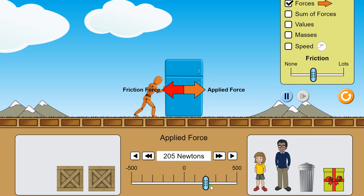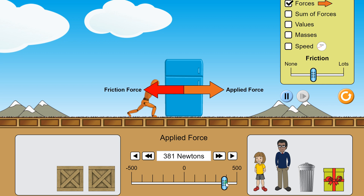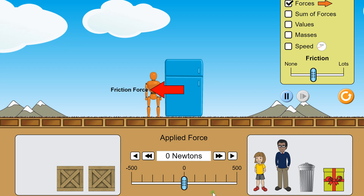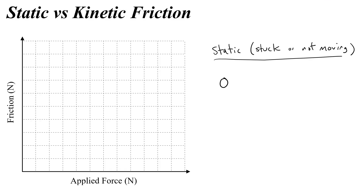When you apply force, friction grows and grows, balancing and canceling the applied force until you get the object to start moving. Then look at the friction force — it actually decreases a little bit. On our graph, static friction is going to vary from zero to some maximum value, which we call Fs max.